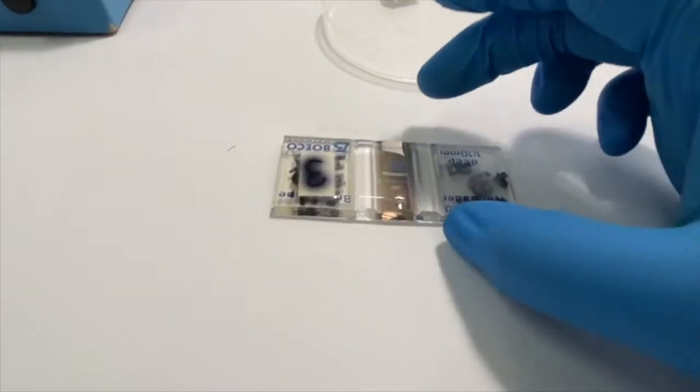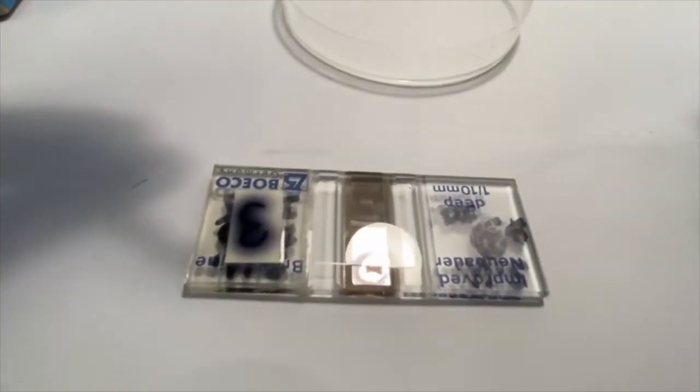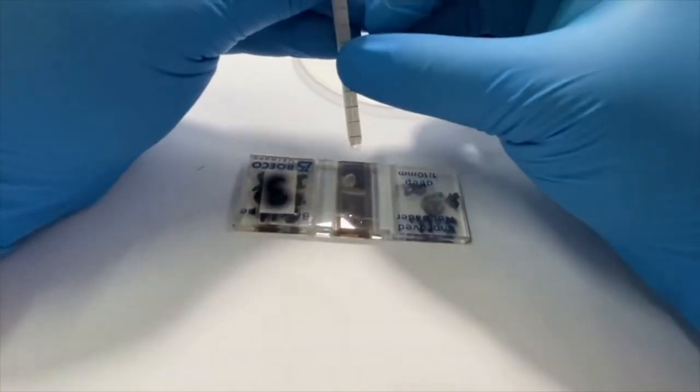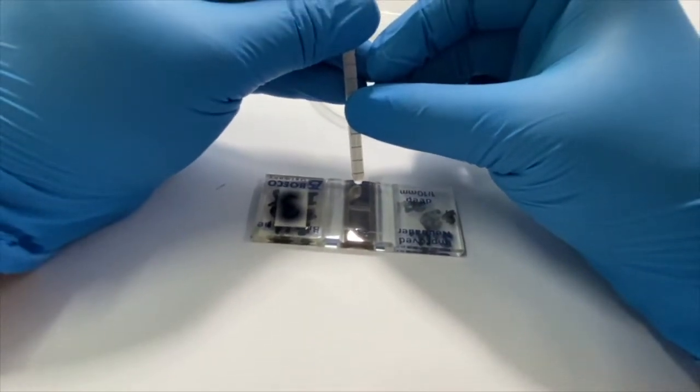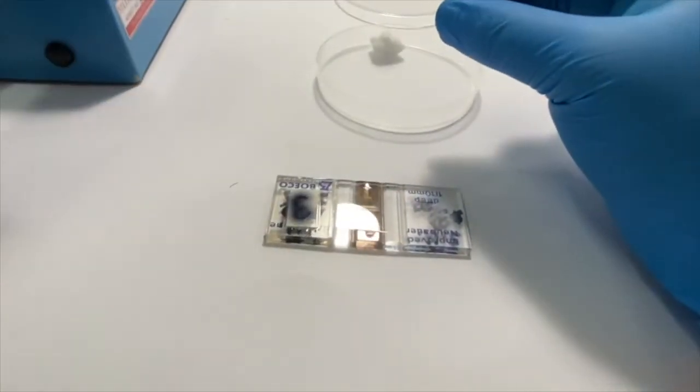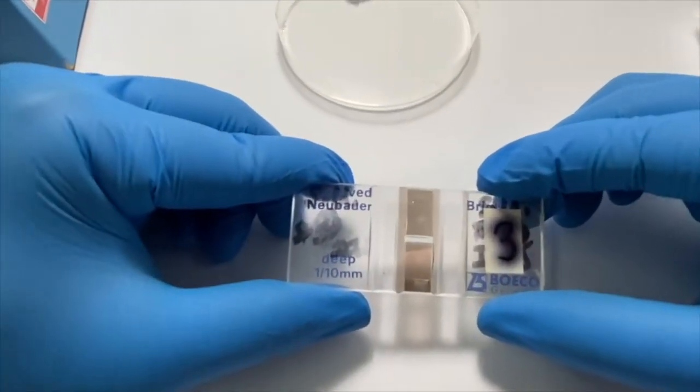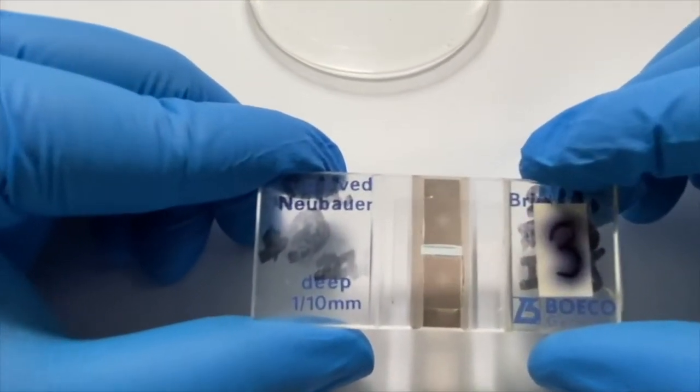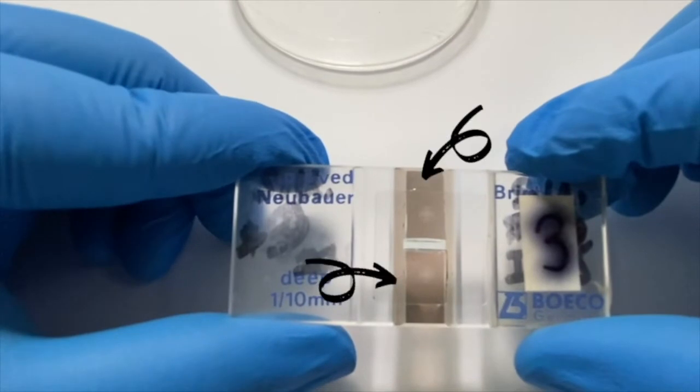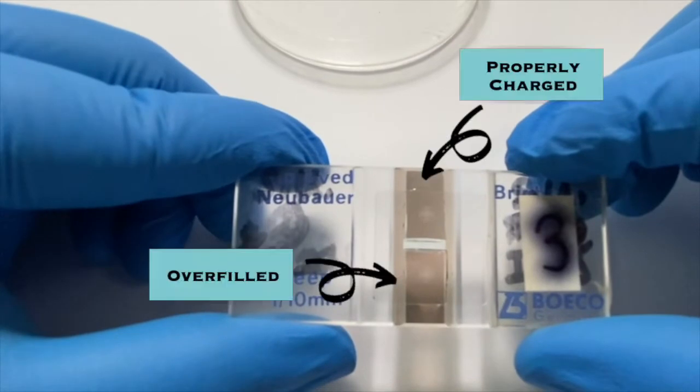Charge the other counting chamber. Let's take a closer look. Here you can see that the top chamber is an example of a properly charged chamber, and the lower one is overcharged. Try to avoid the latter.